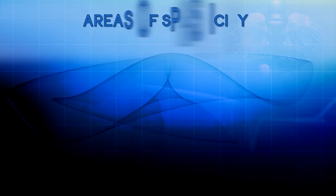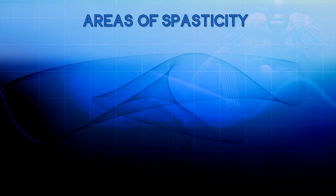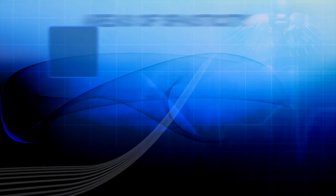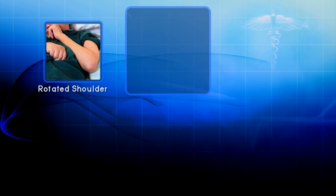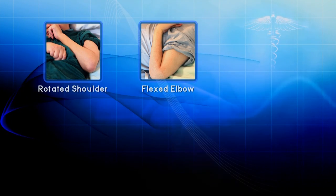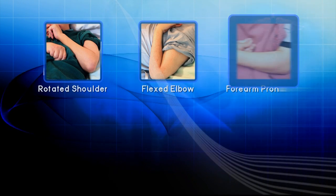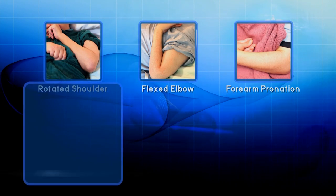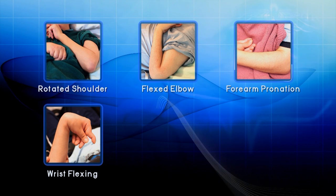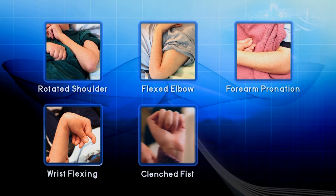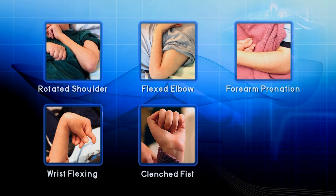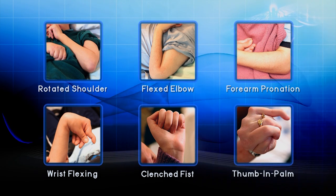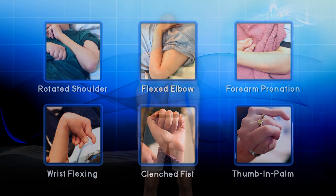There are six basic upper body patterns of spasticity: a rotated shoulder, a flexed elbow, pronation of the forearm, flexing of the wrist, a clenched fist where fingers are jammed into the palm of the hand, and thumb in palm.